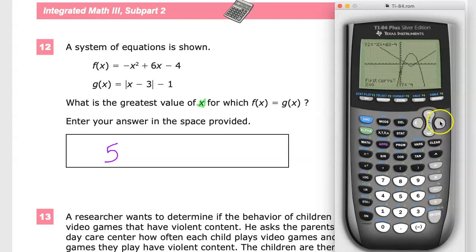But you can go down to intersect. And it'll just say what's the first curve, which is like saying, do I have it marked on the first one that you typed in? The answer to that is yes. The second one, yep.